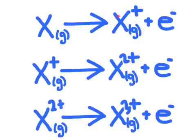We can then take this ion and remove another electron from it, and this would be called the second ionization energy, and we could continue on through this process. Now, each time we remove an electron, it's going to become more difficult to remove another electron.